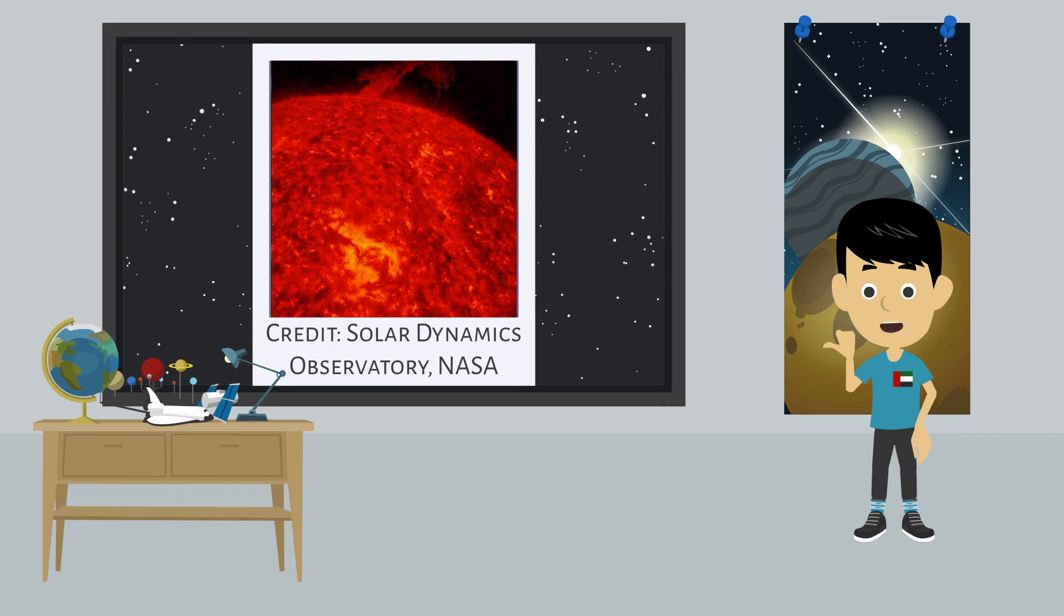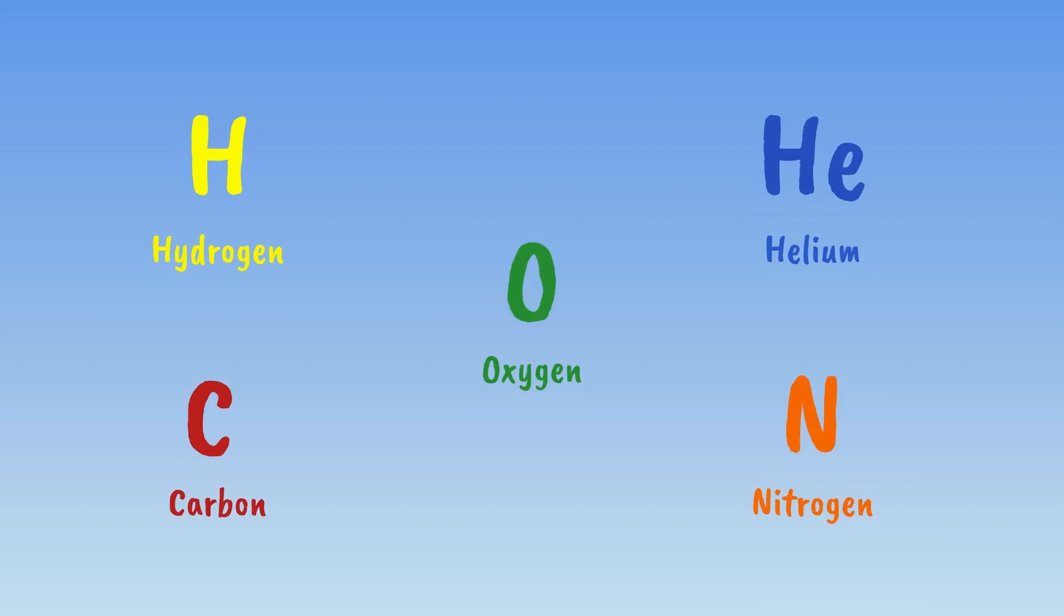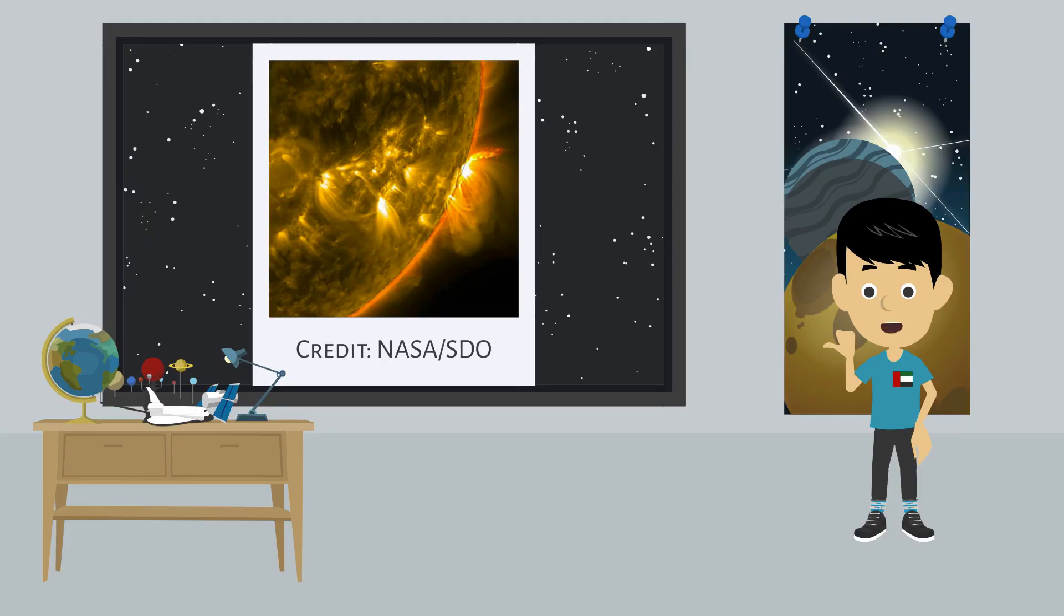The Sun's gas is mainly made out of hydrogen, helium, carbon, nitrogen, and oxygen. Therefore, the Sun has no surface.